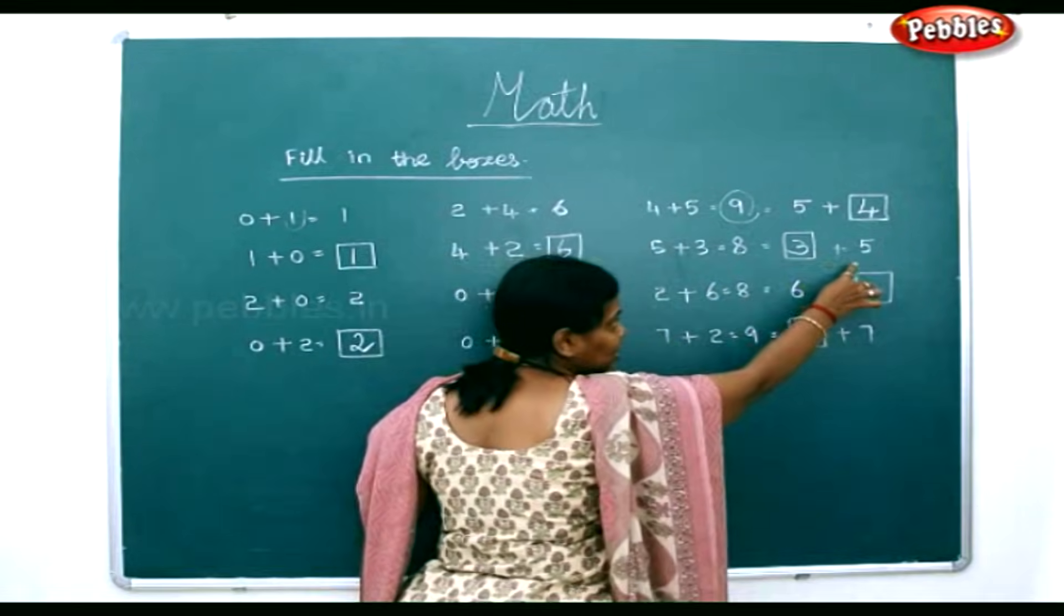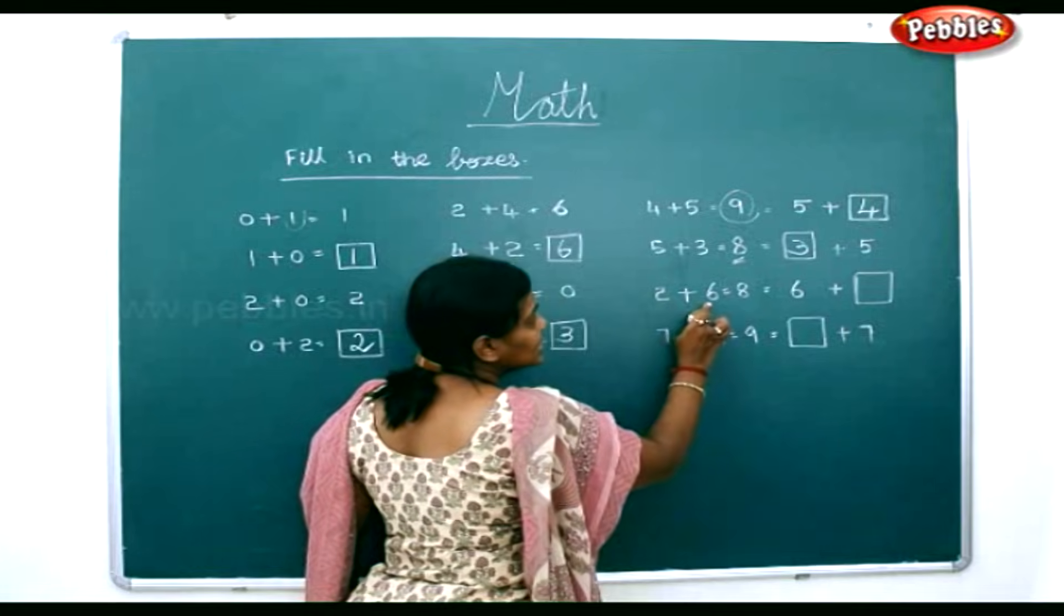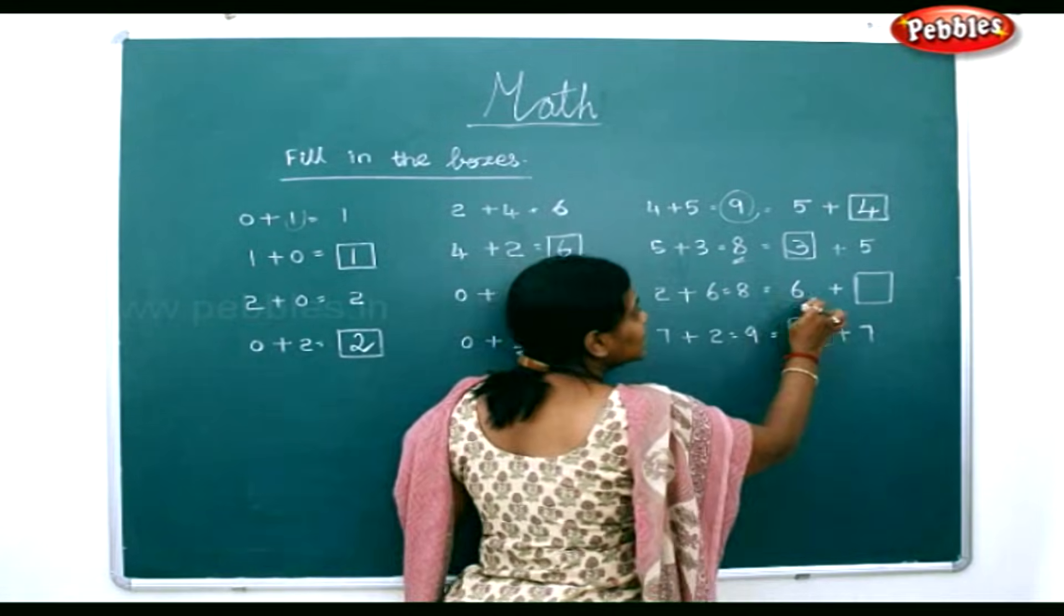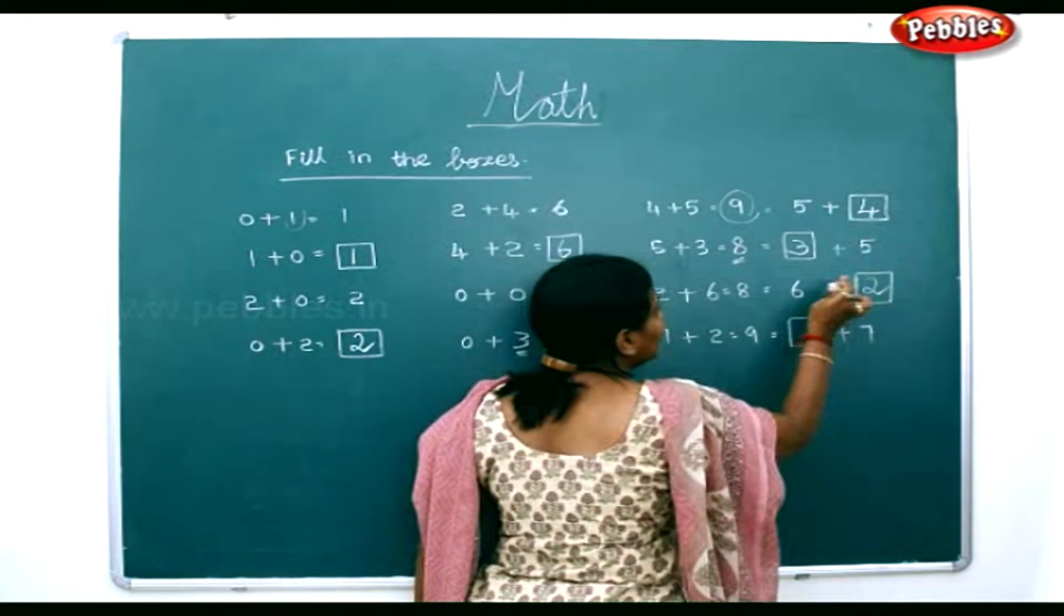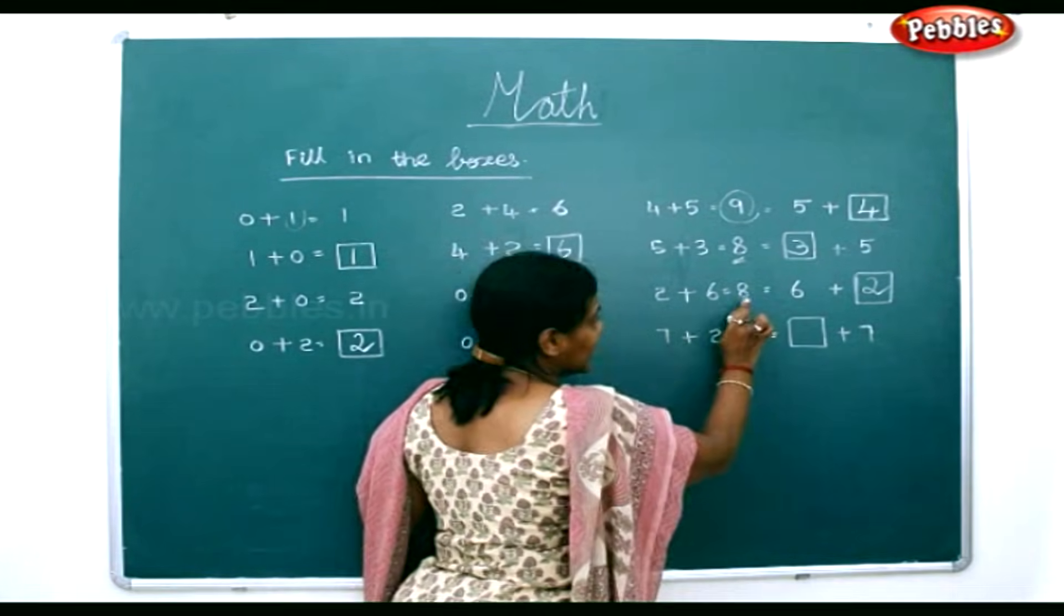The order of the numbers has been changed, but the sum will be the same, 8. 2 plus 6 is equal to 8. 6 plus 2 will also equal 8 if you add it. You are changing the order of the numbers, but the answer remains the same.